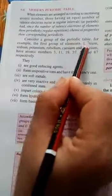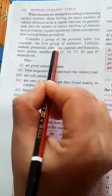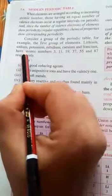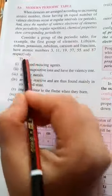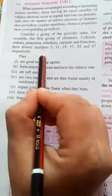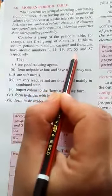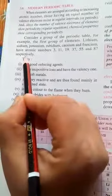Consider a group of the periodic table, for example the first group of elements: Lithium, Sodium, Potassium, Rubidium, Cesium and Francium have atomic numbers 3, 11, 19, 37, 55 and 87 respectively.